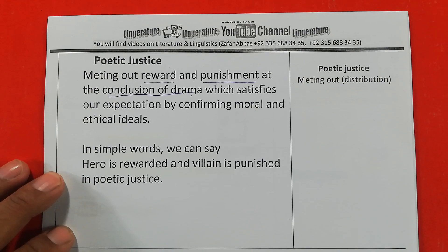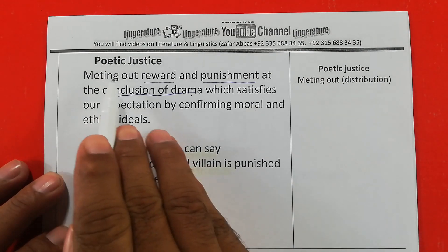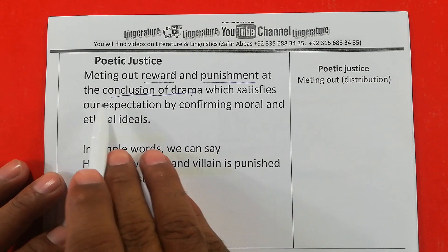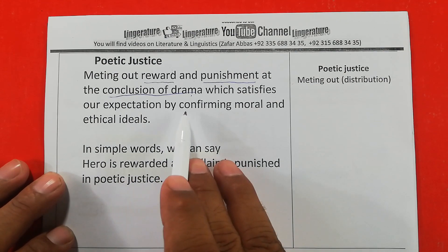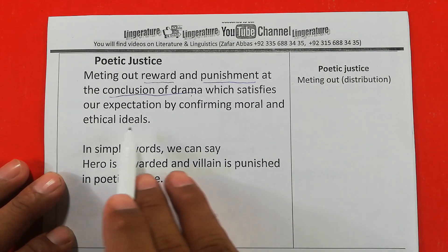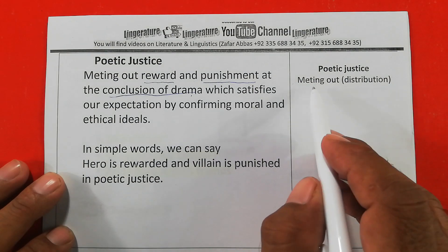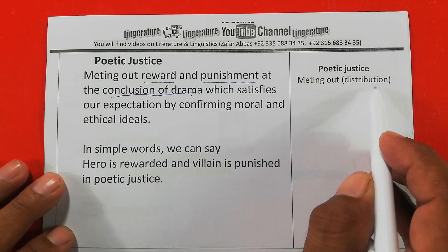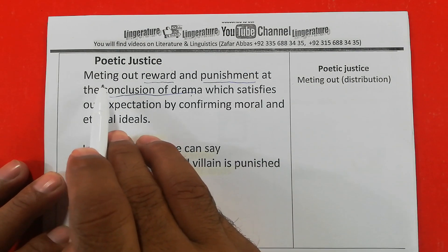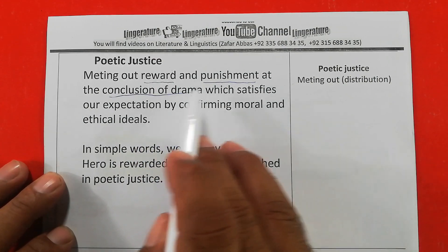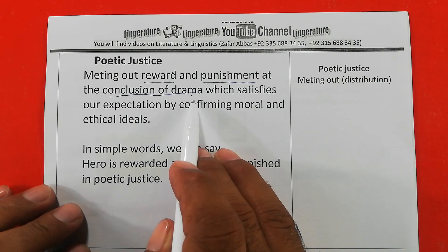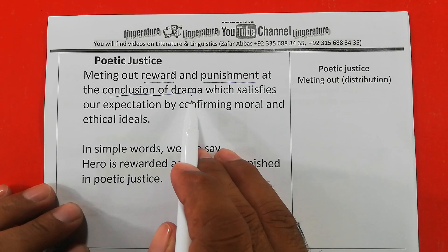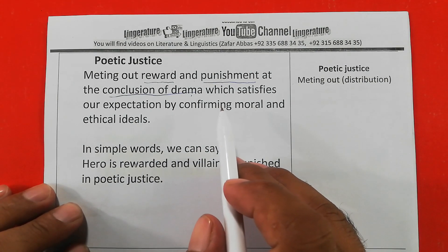Now let's move towards our topic: poetic justice. Poetic justice is the meting out of reward and punishment at the conclusion of a drama, which satisfies our expectations by confirming moral and ethical ideals. 'Meting out' simply means distribution — so we can say distribution of reward and punishment at the conclusion of the drama.